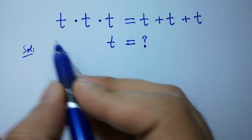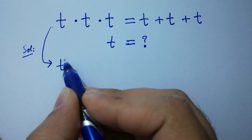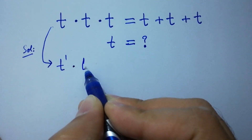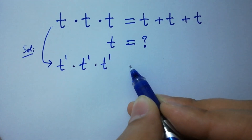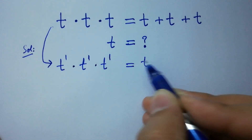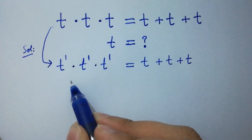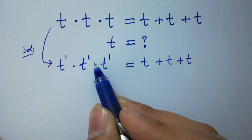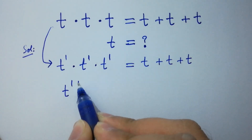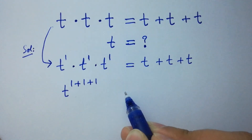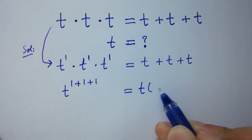This question is the same as t to the power 1 times t to the power 1 times t to the power 1 equal to t plus t plus t. On the left-hand side the base is the same, so we add the powers, giving t to the power 1 plus 1 plus 1, and on the right-hand side t can be factored out.